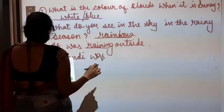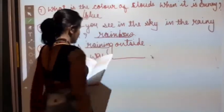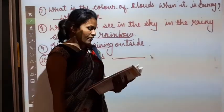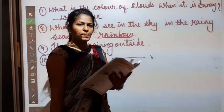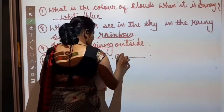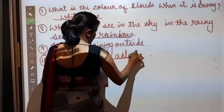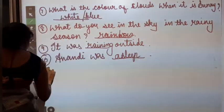Anandi was dash. Anandi kya kar rahi thi? Awake, reading, asleep, drawing. Who kya kar rahi thi? So rahi thi? Asleep. Number eleven.